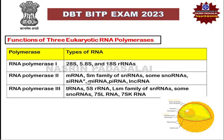RNA Polymerase I transcribes the 28S, 5.8S, and 18S ribosomal RNA genes. The 5S ribosomal RNA is transcribed by RNA Polymerase III. RNA Polymerase II is involved in transcribing messenger RNA, the Sm family of small nuclear RNA, small interfering RNA, microRNA, Piwi-interacting RNA, and long non-coding RNA.